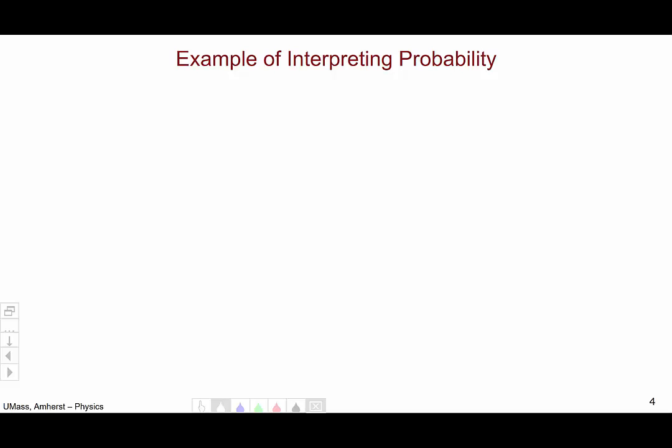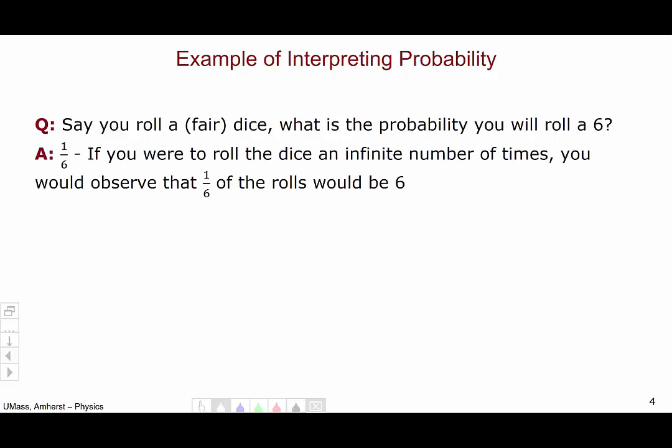Let's begin by thinking about an example of interpreting the idea of probability. Say you roll a fair dice. What is the probability that you will roll a six? Well, of course the answer is one out of six. If you were to roll the dice an infinite number of times, you would observe that one-sixth of the rolls would in fact be a six.